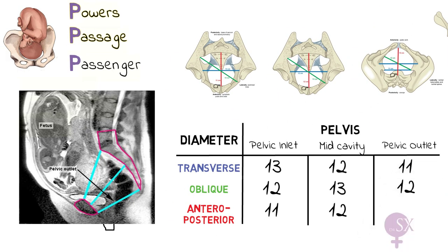To make delivery easier we want the fetal head to pass through the largest space available in the pelvis. As we can see in the table, the largest diameters are the transverse diameter of the pelvic inlet, the oblique diameter of the mid-cavity, and the anterior-posterior diameter of the pelvic outlet. The head will therefore be rotating accordingly to fit these largest diameters.